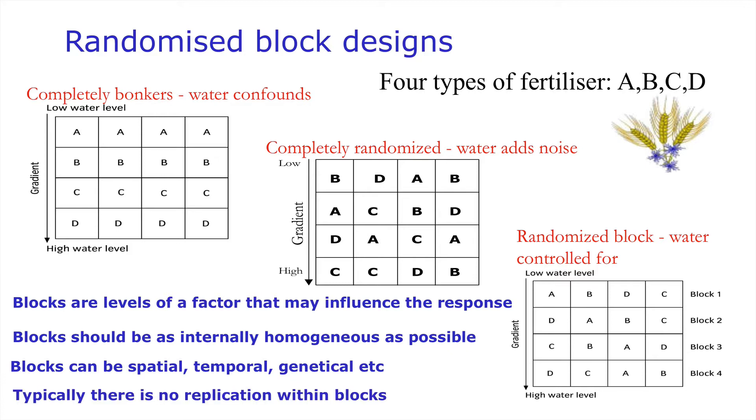Typically there is no replication within blocks you will see that we have one replicate of each of the levels of fertiliser. But sometimes there is more than one replicate but it really does help for reasons of orthogonality which we will get on to later to have the same number of replicates of each of the treatment levels in a given block.